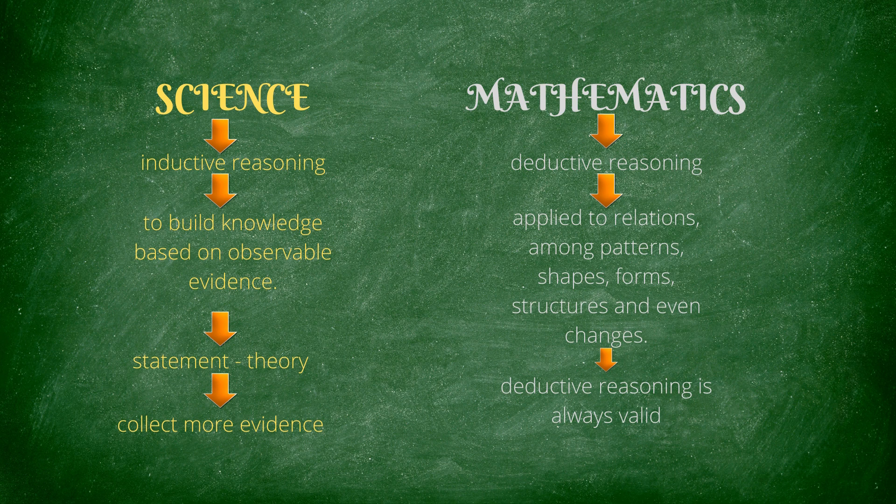Errors can occur either by applying principles incorrectly or starting with incorrect assumptions. Deductive reasoning makes use of undefined terms, formally defined terms, axioms, theorems, and rules of inference.